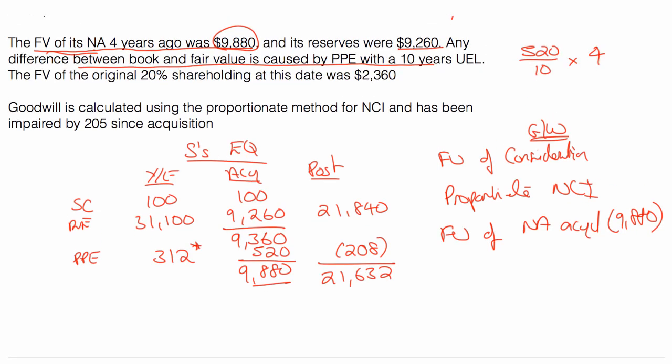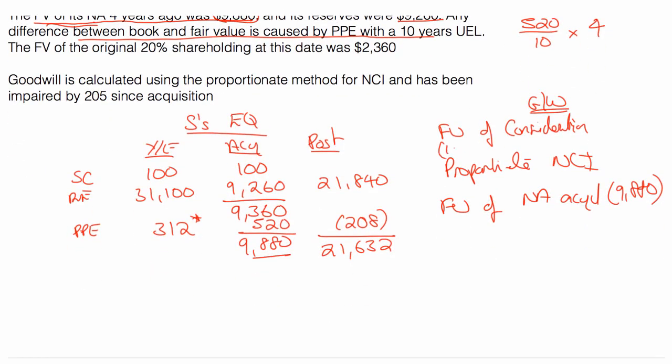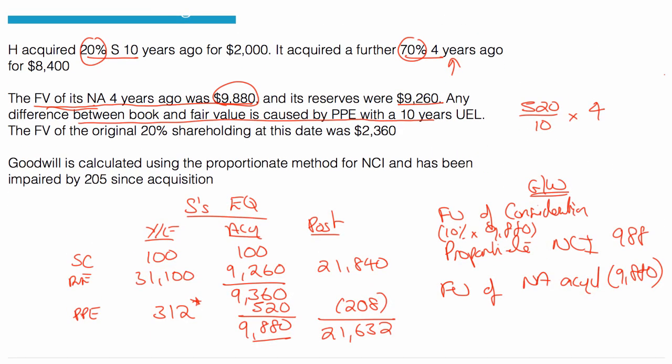Proportionate NCI then. I own, I've forgotten, 20% plus another 70. So I own 90. So proportionate NCI would be 10% of the 9880, which is 988 then. Fair value of consideration at the date of acquisition. The date of acquisition was 4 years ago. The 70% was definitely worth 8,400. The question is, what was the 20% worth?